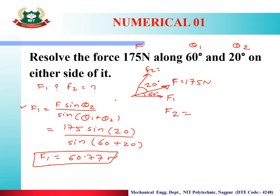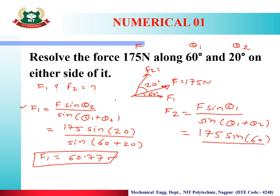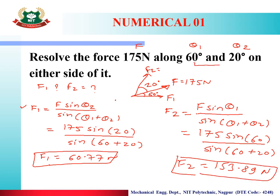Now for F2: F2 = F × sin(θ1) / sin(θ1 + θ2) = 175 × sin(60°) / sin(60° + 20°) = 153.89 Newton. So the two components are F1 = 60.77 N and F2 = 153.89 N. Remember, in non-perpendicularity numericals, one force and two angles will be given.